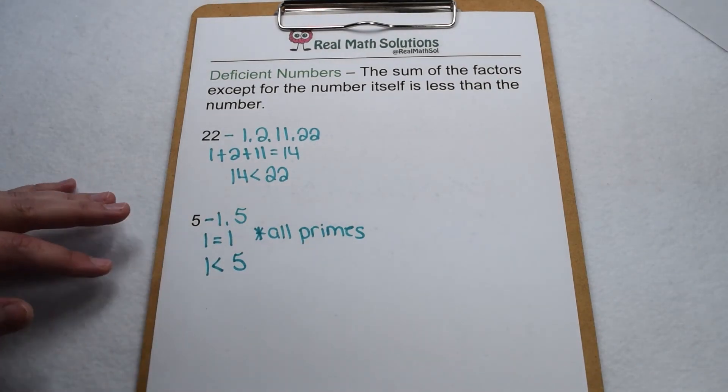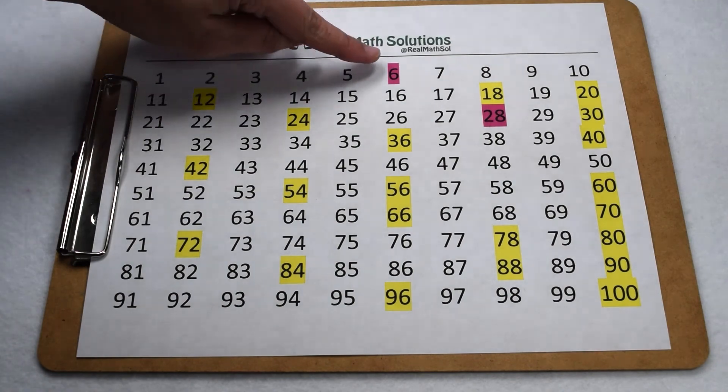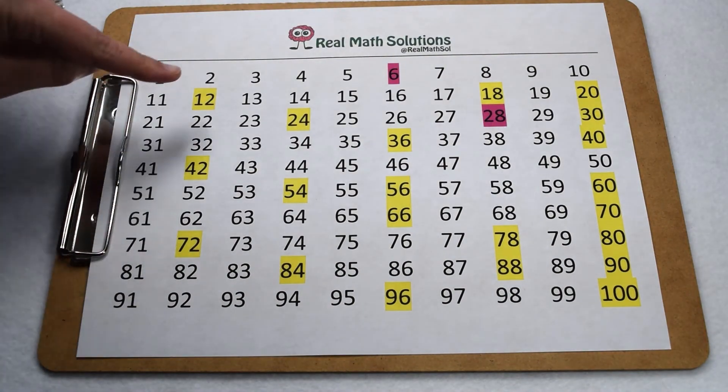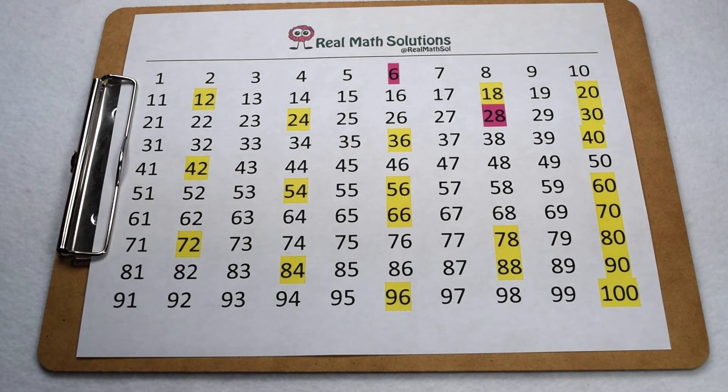For the numbers 1 through 100, our perfect numbers of 6 and 28 are highlighted in pink. All of our numbers that are abundant are highlighted in yellow. That means all the remaining numbers not highlighted are going to be deficient.